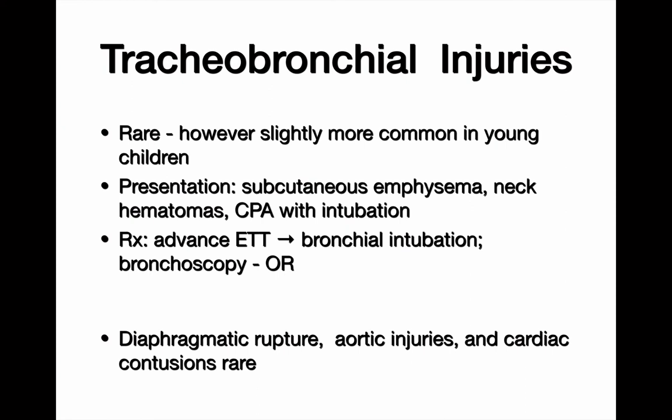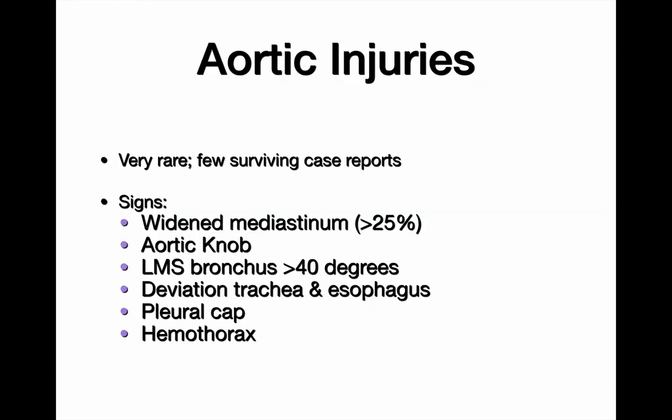Tracheobronchial injuries are extremely rare but slightly more common in young children. Presentation is typically subcutaneous emphysema; neck hematomas above the clavicle may be visible, and you may see asymmetrical chest expansion. The best way to diagnose them is bronchoscopy — CT scan is not very sensitive or specific for tracheobronchial injuries in adults or children. Some main stem injuries require urgent operative intervention, so be on the lookout.